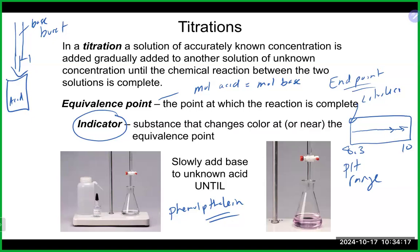From a titration you can calculate things like the concentration of your unknown acid or base. You may have also done standardizing of a base, for example using KHP to standardize your base in Chemistry 50. We're going to talk about some different types of titrations, starting with the first type: a titration between a strong acid and a strong base — like hydrochloric acid and sodium hydroxide — which gives us sodium chloride and water as products.